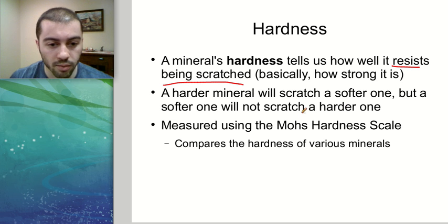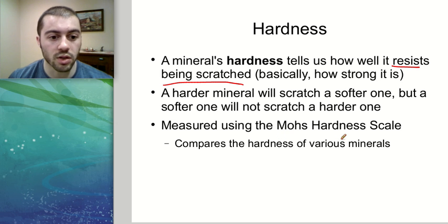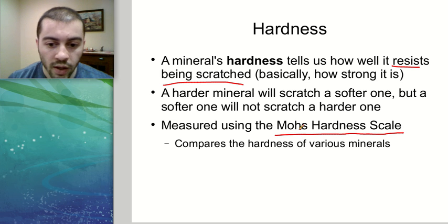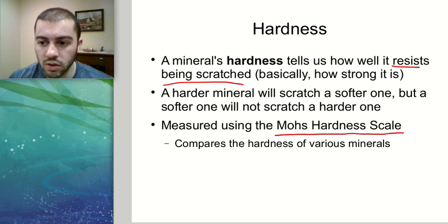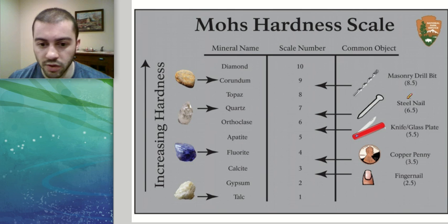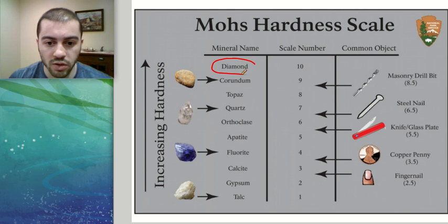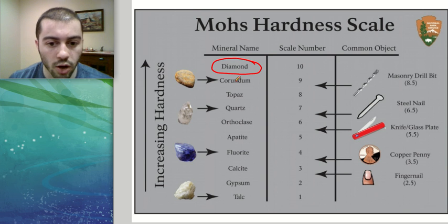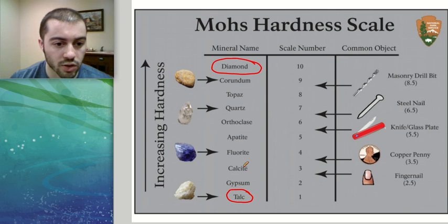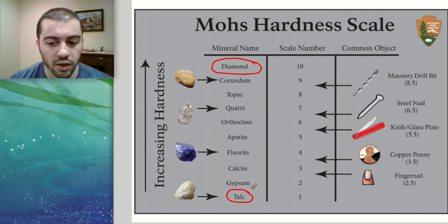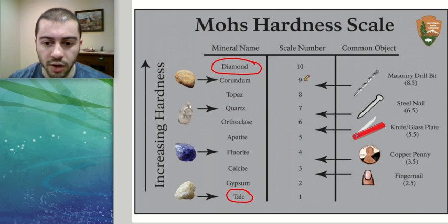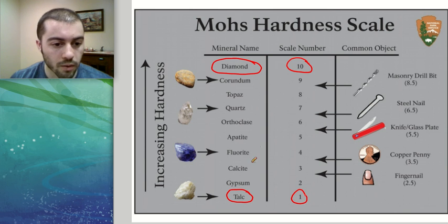To compare mineral hardness, we use the Mohs hardness scale. The Mohs scale compares the hardness of minerals based on ten reference minerals. Diamond is the hardest mineral at a Mohs scale of 10 — very hard to scratch or break. Talc is the softest at 1, and you can even scratch talc with just your fingernail. All the other minerals fall in between on the scale.